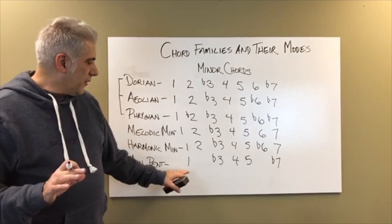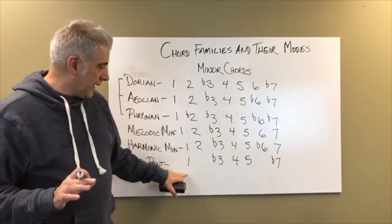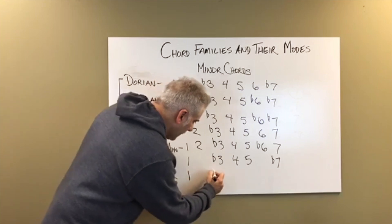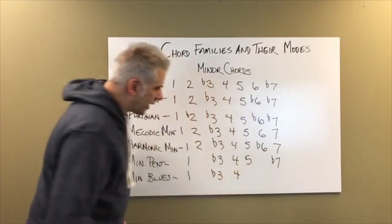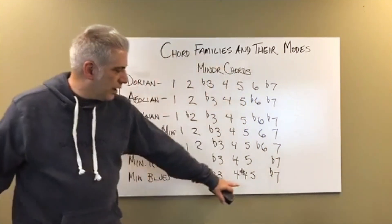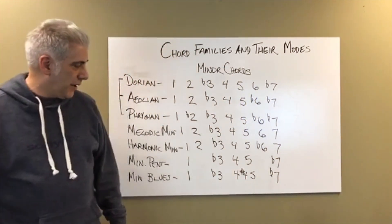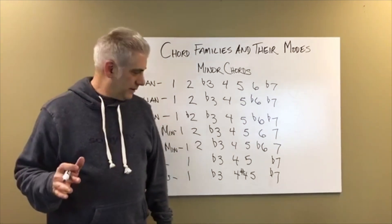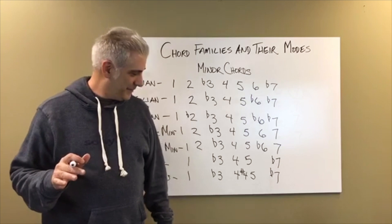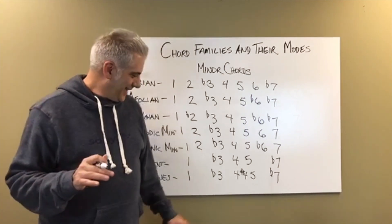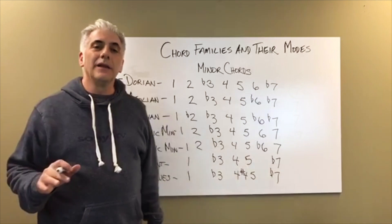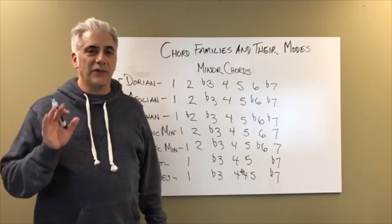The minor pentatonic scale is related to the minor blues scale. The minor blues scale is 1, flat 3, 4, sharp 4, 5, flat 7. That sharp four — or flatted fifth — is the tritone, your blue note. You can say the third is a blue note too; there are a lot of blue notes in blues. That sharp four is what gives the minor blues scale its characteristic sound and also differentiates it from the minor pentatonic. The blues scale is a six-note scale; pentatonic — pent meaning five — is a five-note scale.